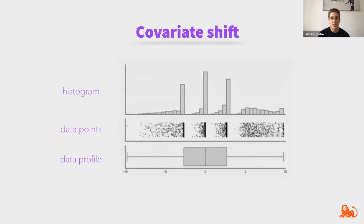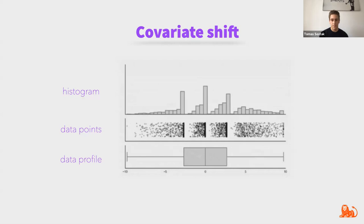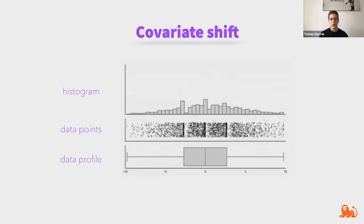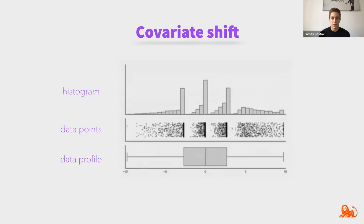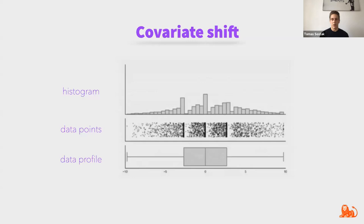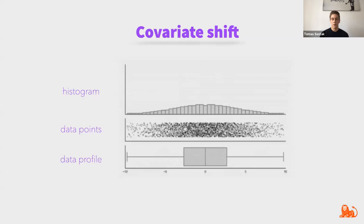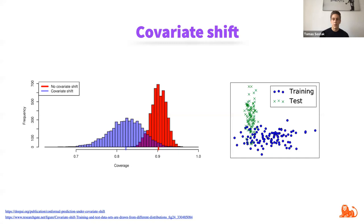Here you can see how data points are shifting, and therefore the histogram of the data is changing. However, the data profile — mean and standard deviation — stays exactly the same. Even though there is a very big shift in data distribution in general, the data profile doesn't show that at all. So if we were tracking only this and saying our data doesn't change so our model performance shouldn't change — that's not right, because our data is actually changing. We are just not monitoring it correctly.